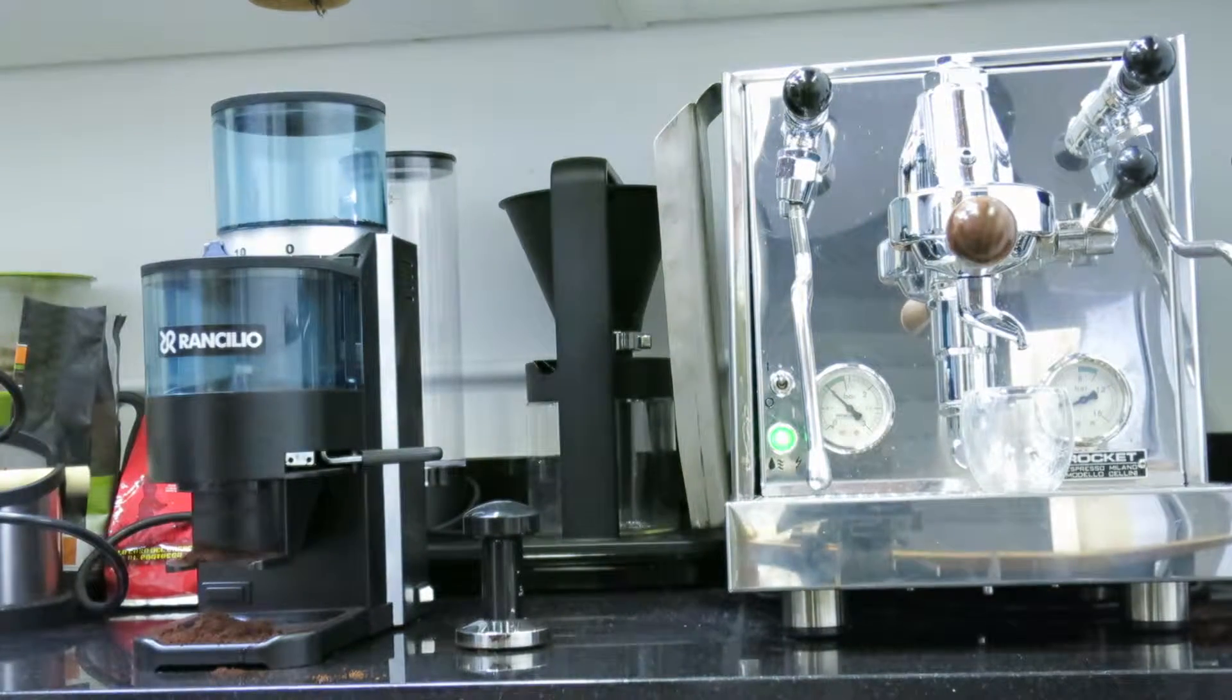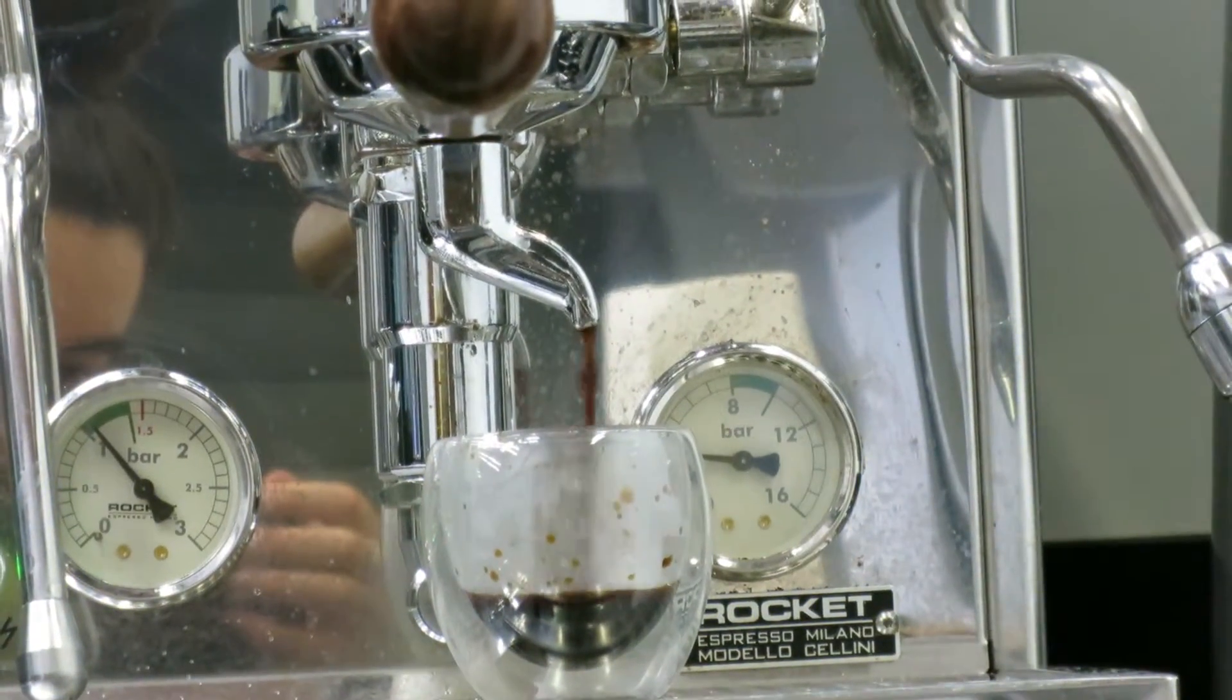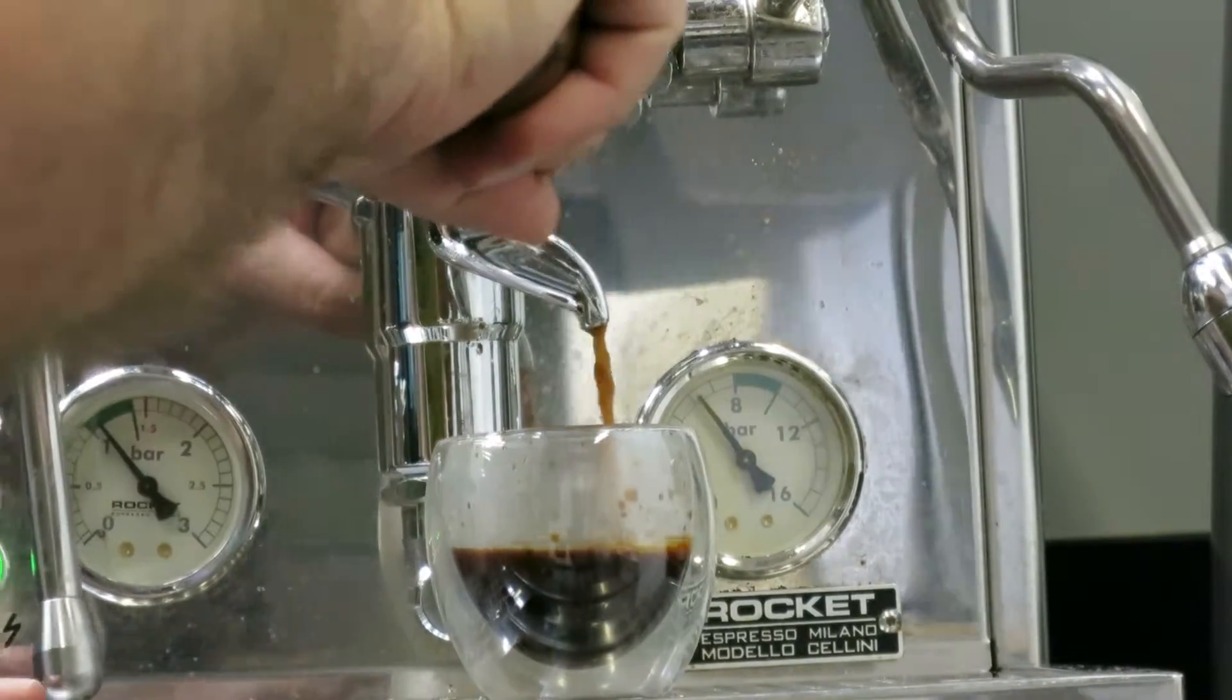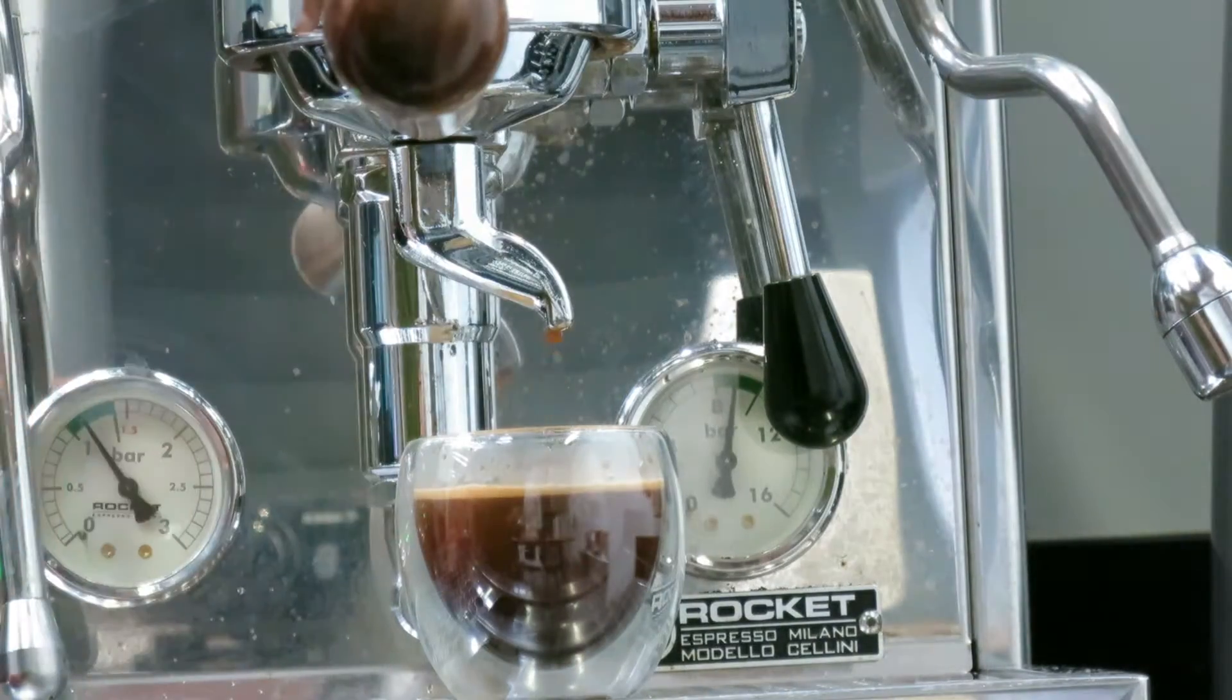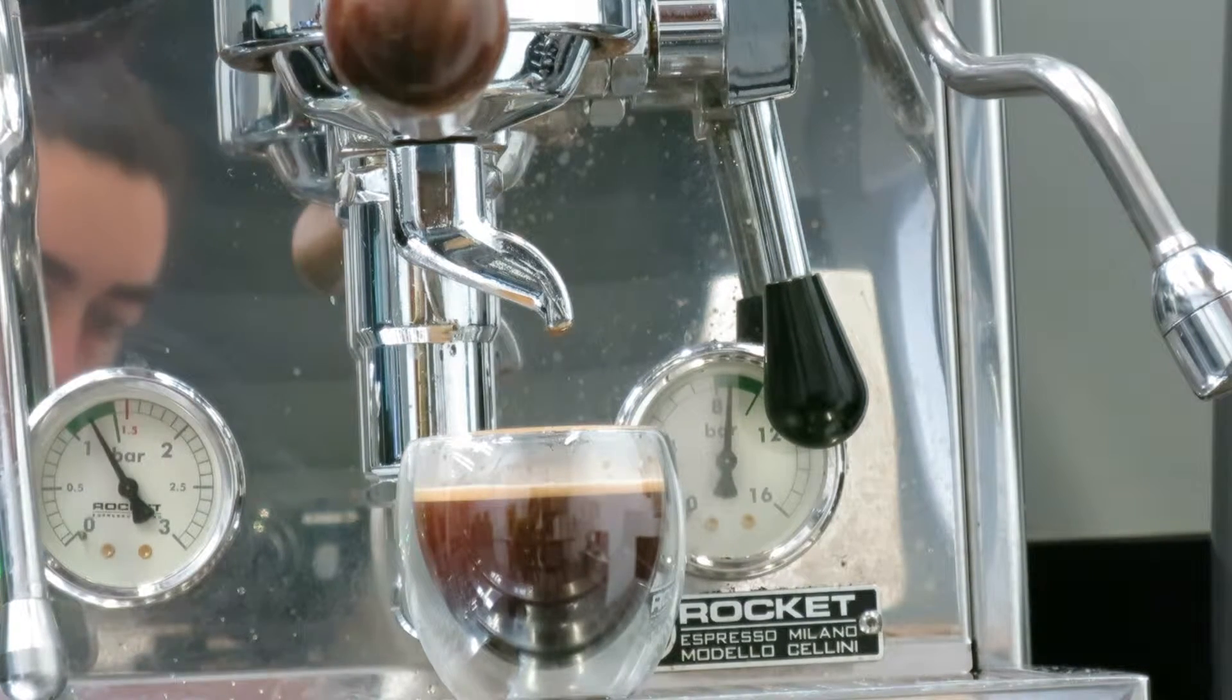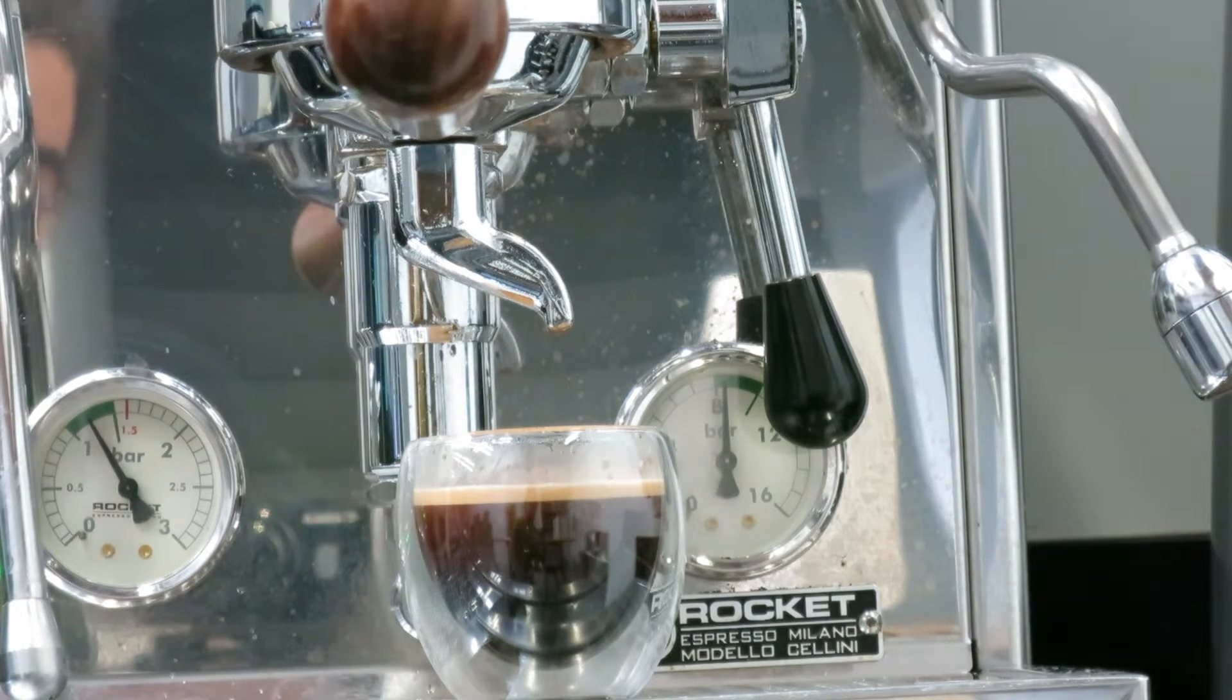I just want to zoom in here to show you the pressure gauge. Here we go. So we're getting nine, eight bars of pressure from these grounds, which is exactly what it needs to be.